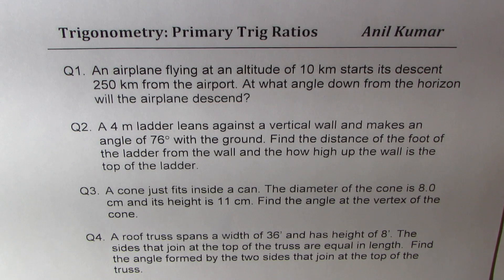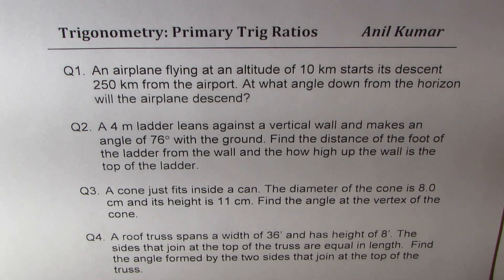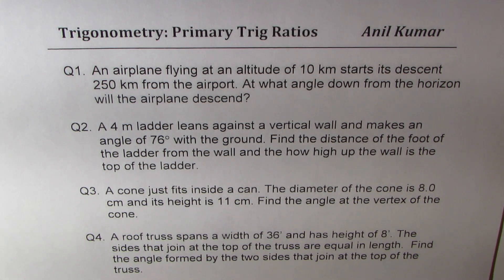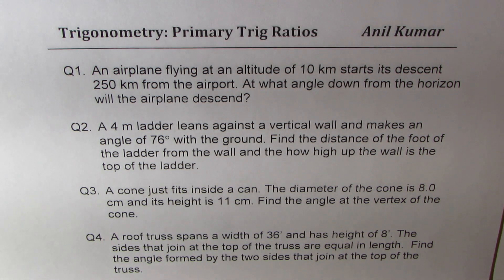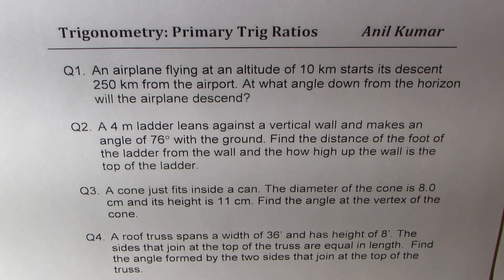Question number one: an airplane flying at an altitude of 10 kilometers starts to descend 250 kilometers from the airport. At what angle down from the horizon will the airplane descend? Question number two: a four-meter ladder leans against a vertical wall and makes an angle of 76 degrees with the ground. Find the distance of the foot of the ladder from the wall and how high up the wall is the top of the ladder.